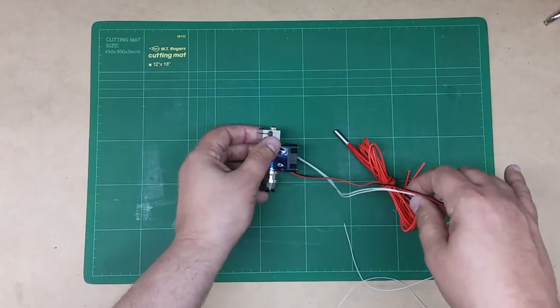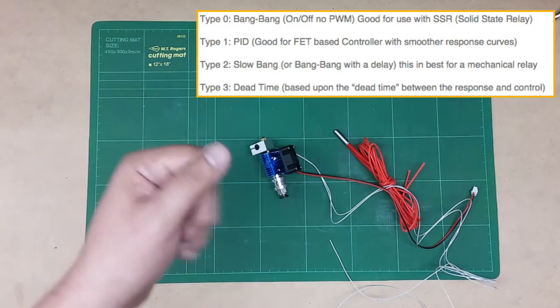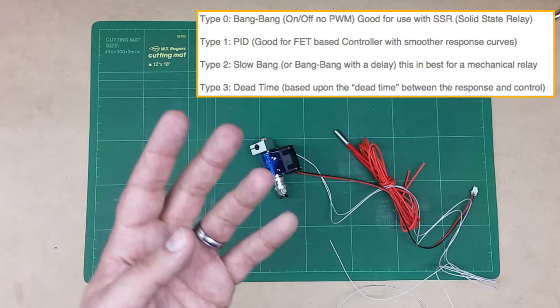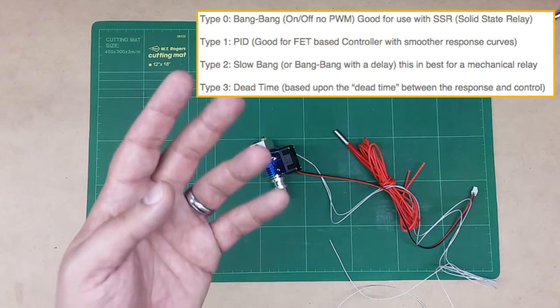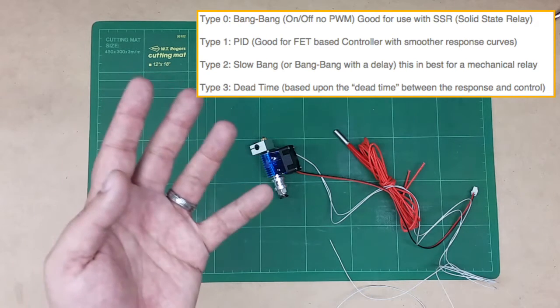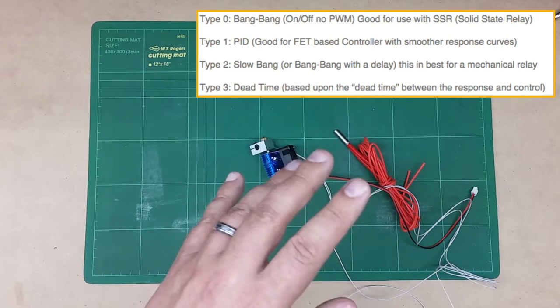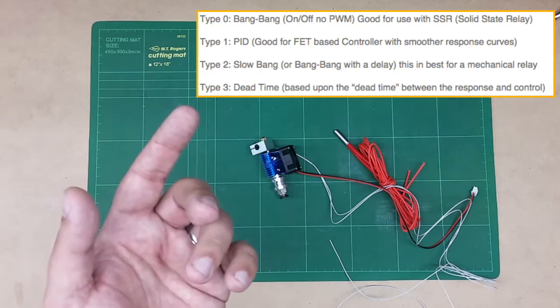Marlin firmware gives us a couple different ways and I'll put a chart up here. So there's four different ways. So there's bang-bang, there's what I call slow bang or bang with the delay, there's dead time, and then there's PID. So the most interesting one for us is PID. But before we get there let's talk about the others.